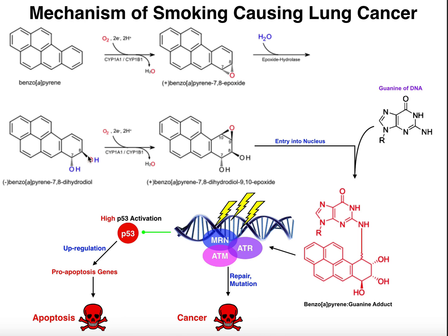A diol is just a compound that has two hydroxyl groups, generally positioned right next to each other on adjacent carbon atoms. Now, what happens from here? It gets epoxidated again.